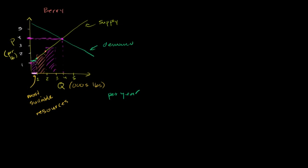In this situation, the producers are getting more than their opportunity cost for the first 3,999 pounds. Just like we talked about consumer surplus, this is the producer surplus. For the first 1,000 pounds, the opportunity cost was a little over $1 a pound, but they're getting $4 a pound. For the next 1,000 pounds, the opportunity cost is about $1.75 a pound, but they're still getting $4 a pound — so they're getting this surplus. The entire shaded area represents the excess value they're getting above and beyond their opportunity cost, and we call this the producer surplus.